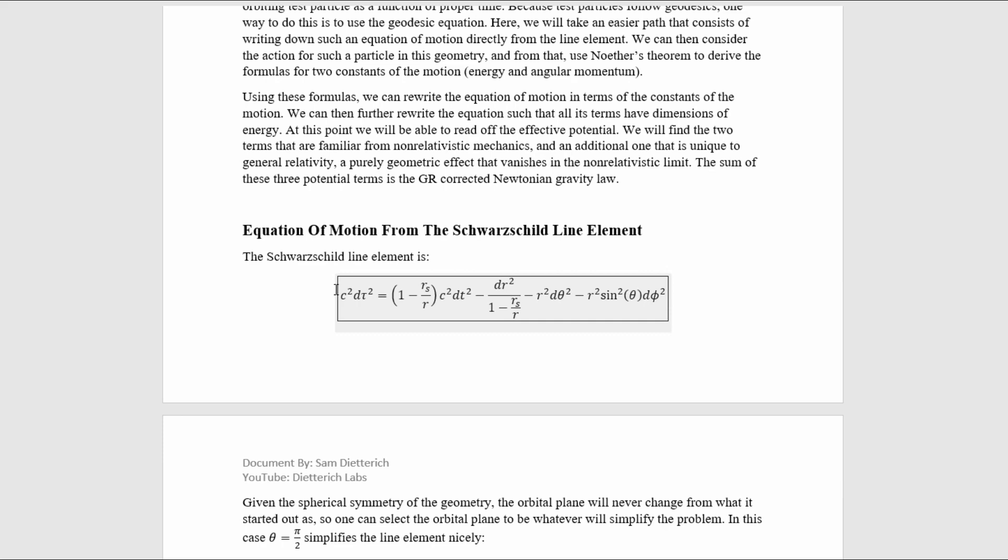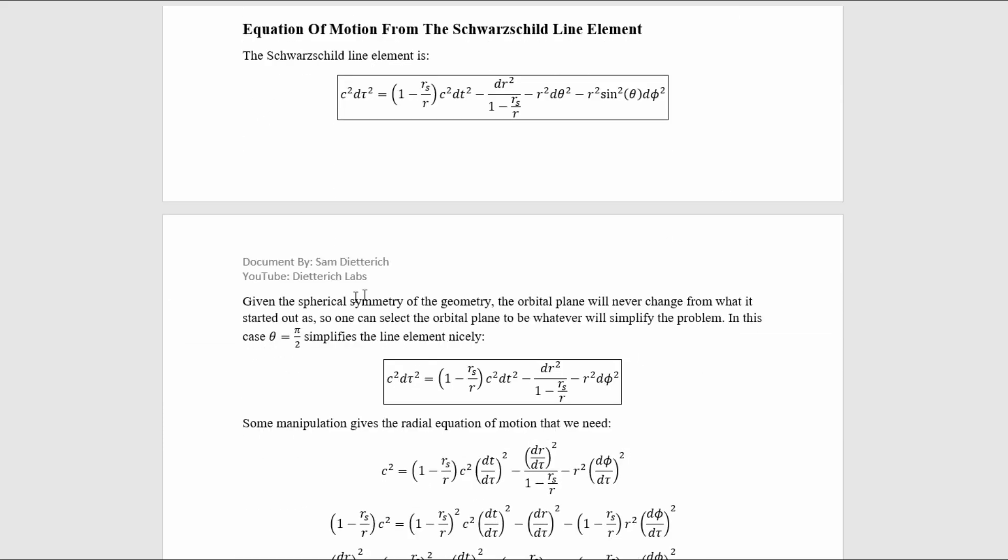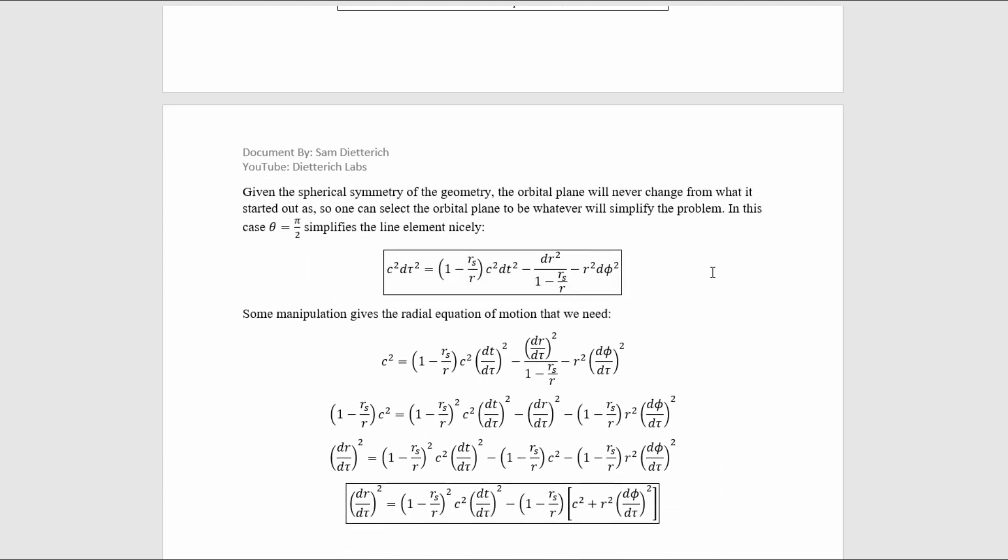The sum of these three potential terms is the GR-corrected Newtonian gravity law. Let's write out that radial equation now. This is the line element of the Schwarzschild metric. Given the spherical symmetry of the geometry, the orbital plane will never change from what it started out as. So one can select the orbital plane to be whatever will simplify the problem the most. In this case, selecting theta to equal pi over 2 simplifies the line element quite nicely, down to this.